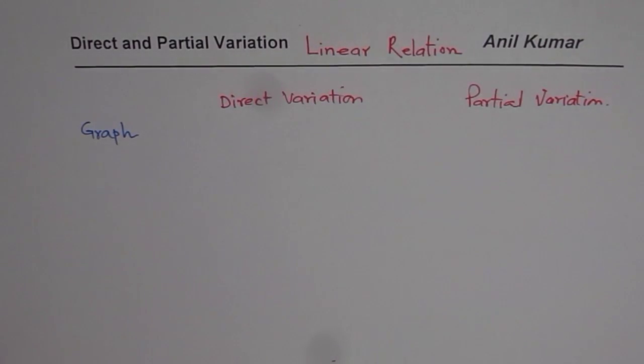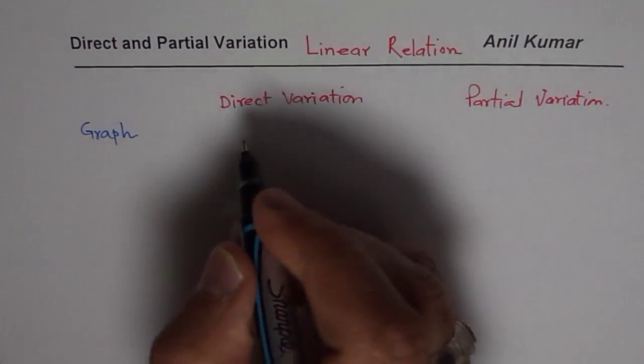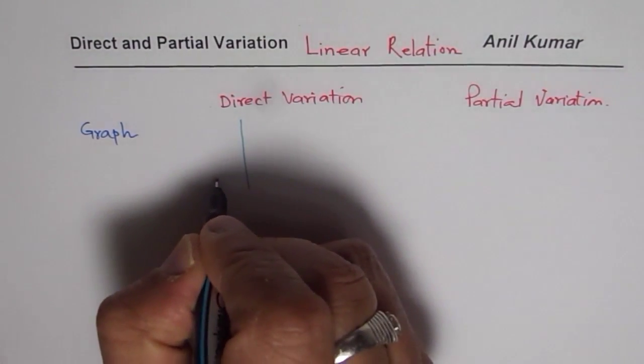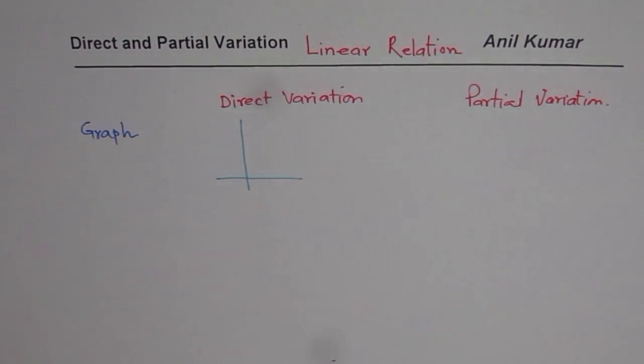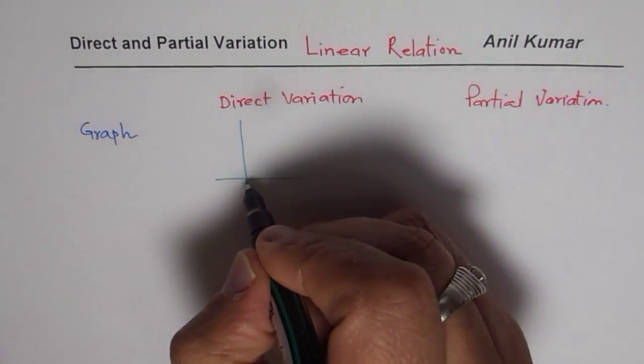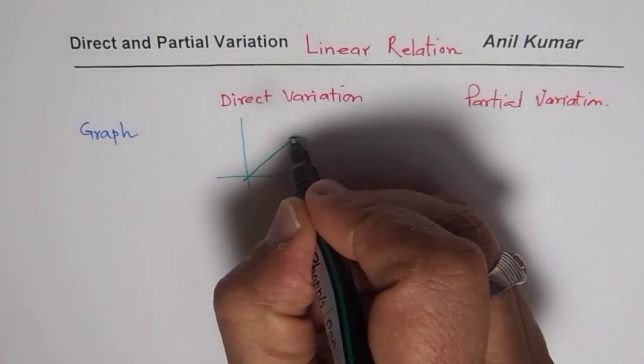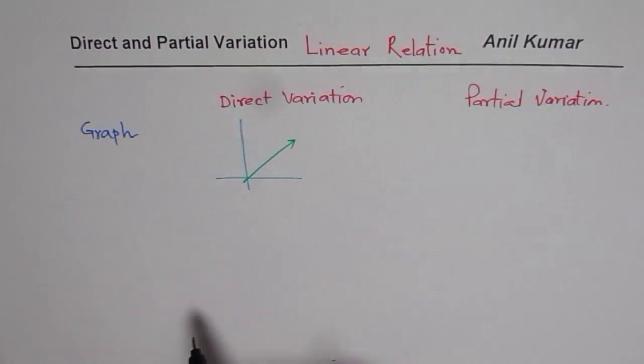In case of a graph for a direct variation, you will get a straight line which will go through the origin. So you will have a straight line which will always go through the origin. So that kind of a relation will be a direct variation.